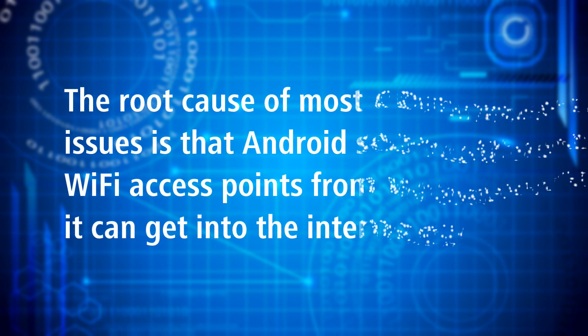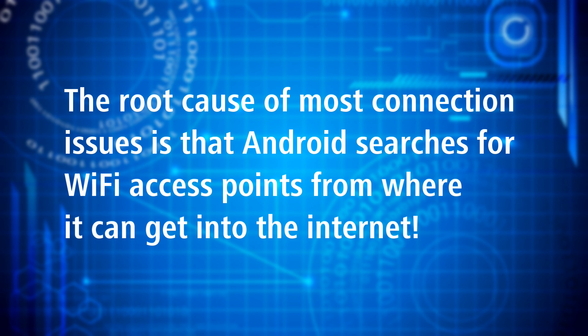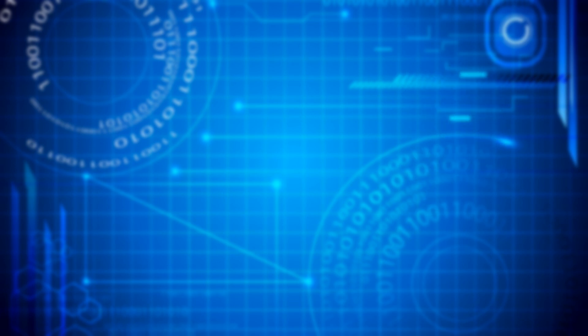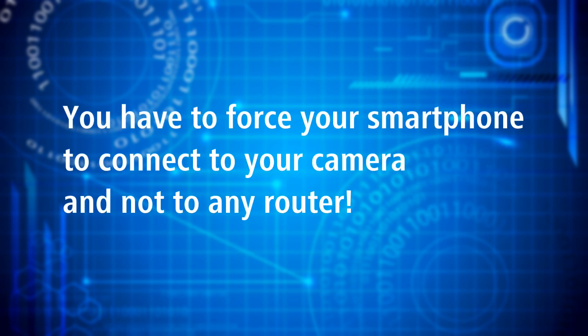So what is the root cause of most connection issues? Whenever you activate wi-fi on your smartphone with a new Android version, it starts to search for a wi-fi access point from where it can get to the internet. If Android has a choice between two wi-fi access points — for example your camera and your wi-fi router — it chooses the router. While the camera creates its own wi-fi hotspot, that one only serves for connecting to the camera but not for getting into the internet. Hence, the smartphone will connect to your router and not to your camera. You have to force your smartphone to connect to your camera and not to any router.